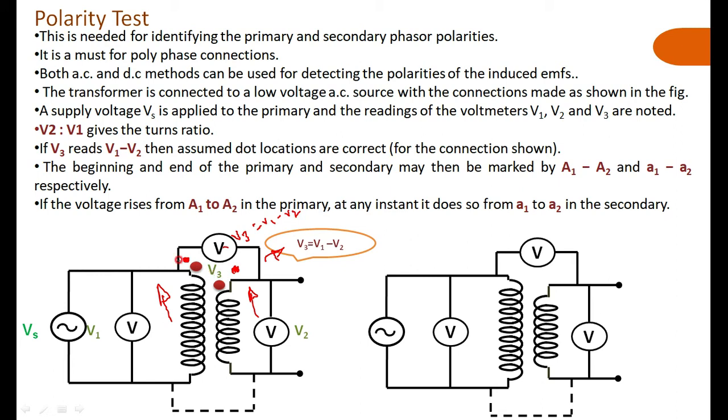In that case, you have to mark the polarity: the terminal with the higher potential is marked with the dot, indicating it as the highest potential with respect to the other terminal.